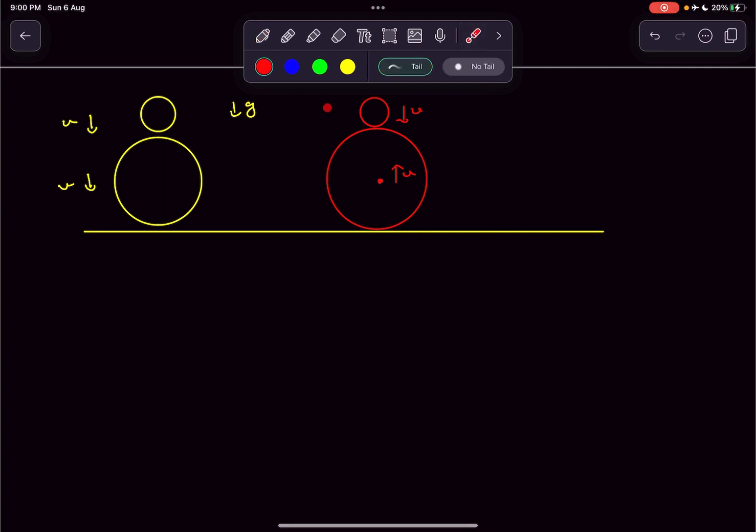After some dt seconds, this small ball will collide with the big ball. Now, as these balls are elastic, another elastic collision will happen at this intersection point. As the collision is elastic, we can say e equals 1, which means velocity of separation equals the velocity of approach. The velocity of approach in this particular case is u plus u.